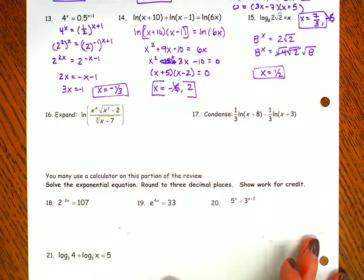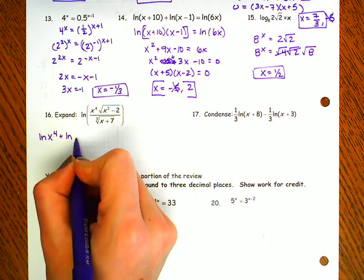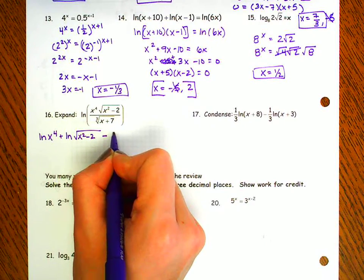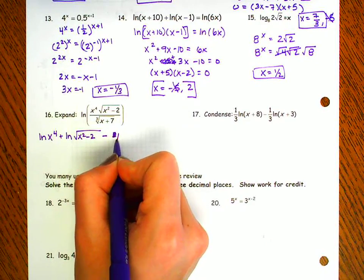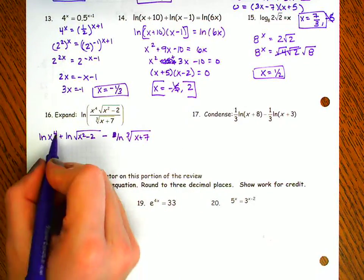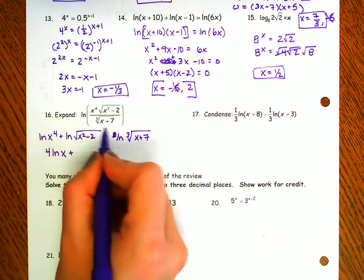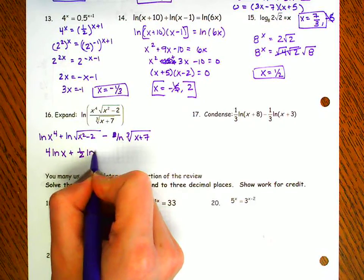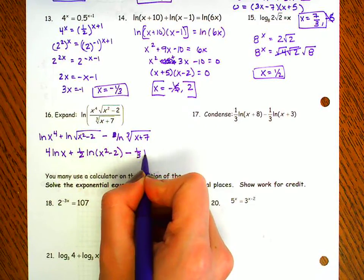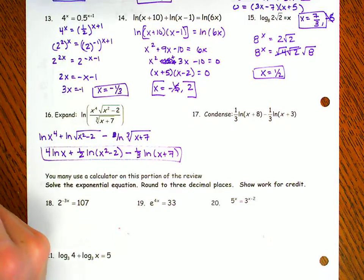For number 16, we're going to expand. So the first thing I'm going to do is say everything that's in the numerator is going to get a plus sign. Everything in the denominator is going to get a minus sign. OK. Now we're going to deal with the exponents. This is an exponent of 4. This is an exponent of 1 half. That's the square root. This is an exponent of 1 third. And that there is our final answer. You guys did a good job with that on the quiz. So it should be OK.